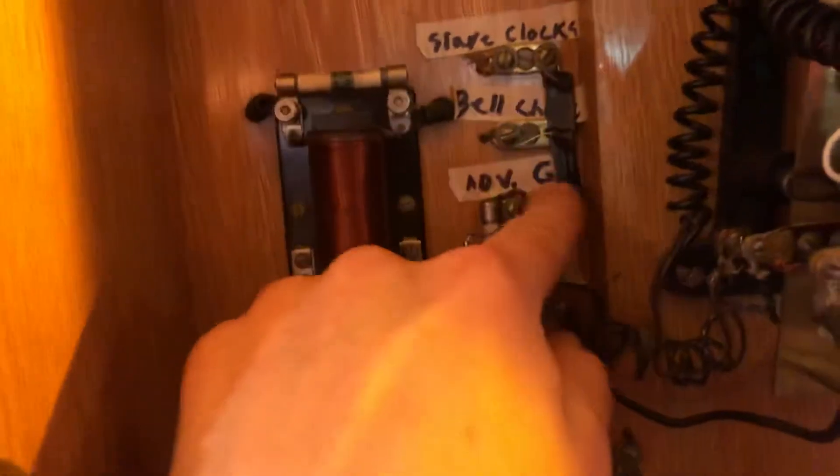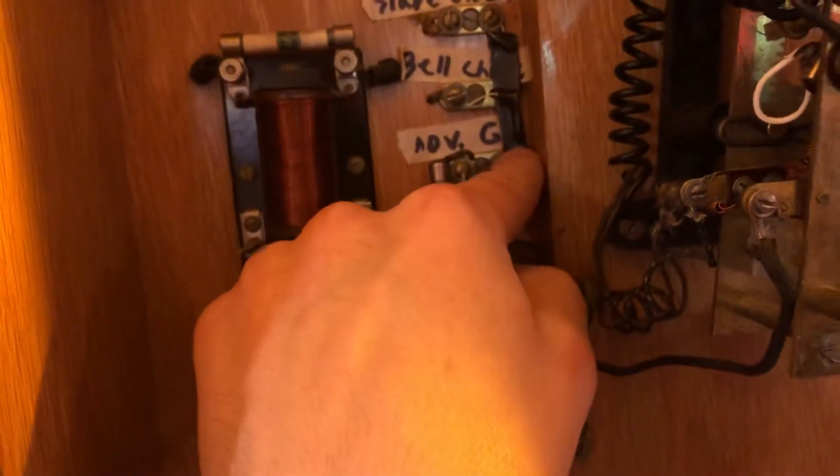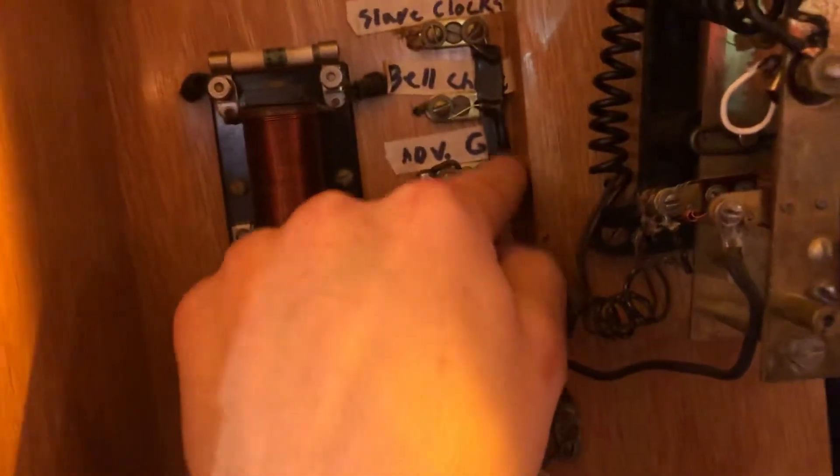And it also advances the slave clocks. The reason why there's separate contacts here, though, is you don't want reverse polarity going back. So I placed diodes going outward to the bell chime and a separate one going to the slave clocks.